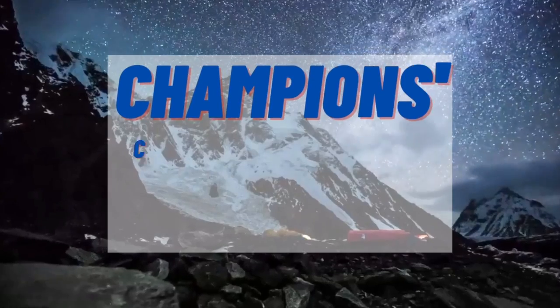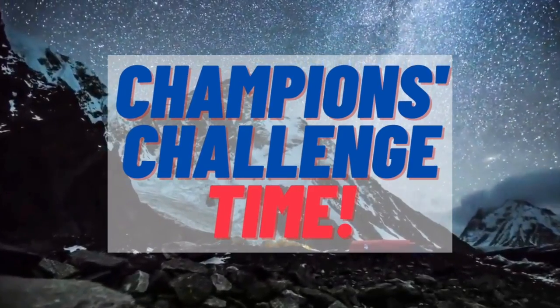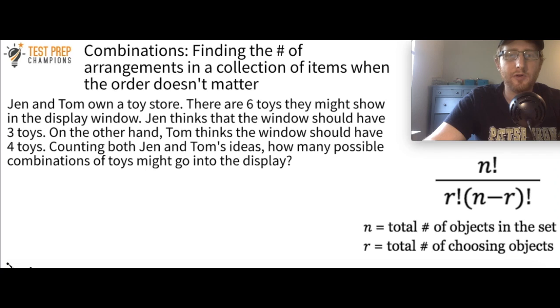Now it's time for me to introduce this video's champions challenge question. Now, if you're new to my channel, first of all, welcome. Thank you for sticking with me so far into the video. The champions challenge is when I pick out, in my opinion, the hardest question in the video. And that's what I'm going to let you try next. Jen and Tom own a toy store. There are six toys they might show in the display window. Jen thinks that the window should have three toys. On the other hand, Tom thinks the window should have four toys. Counting both Jen and Tom's ideas, how many possible combinations of toys might go into the display. So now is your chance to pause the video, try to figure this out, take all the time you need.